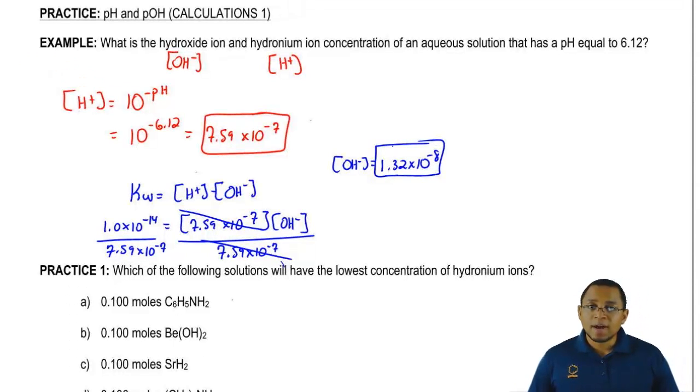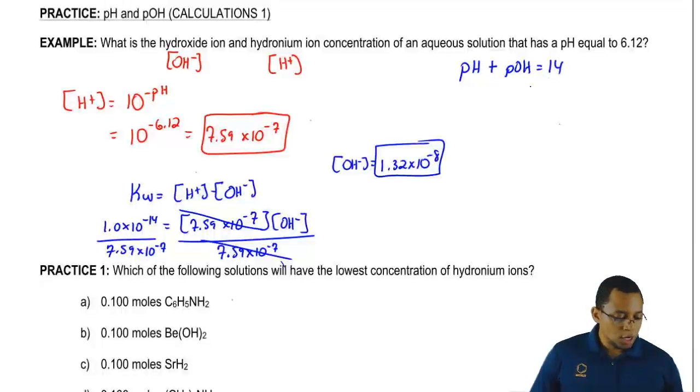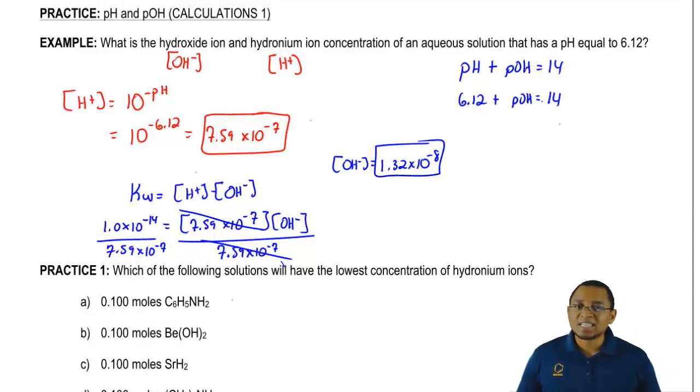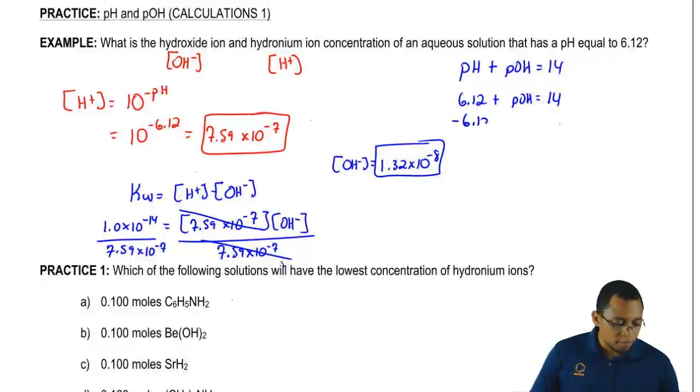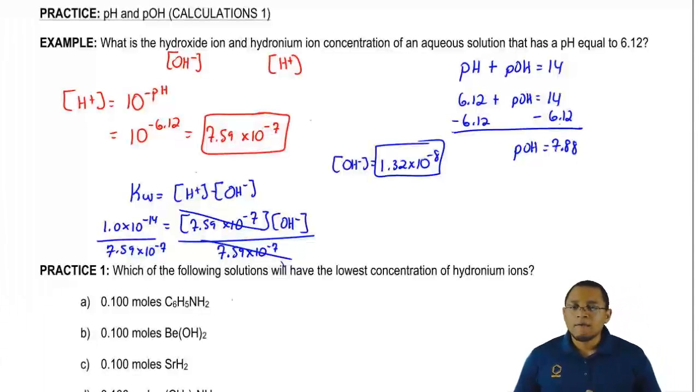The second way we could find it is if we know pOH, we can make a connection between pOH and OH minus. So first we'd say that pH plus pOH equals 14. We know pH is 6.12 so let's just isolate our pOH. Subtract 6.12 from both sides.